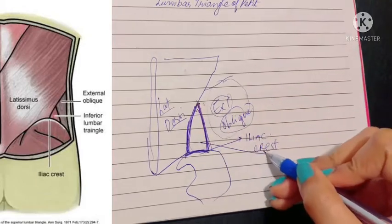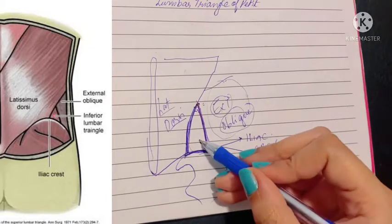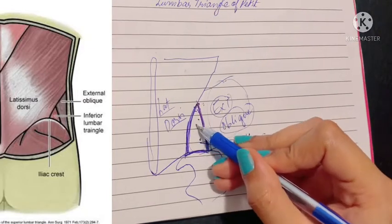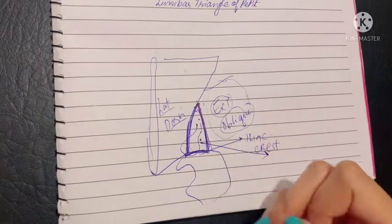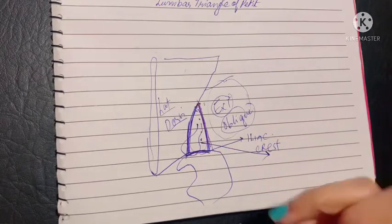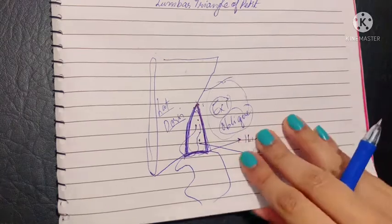What is the significance of this triangle? This is an area of weakness through which a hernia may protrude out. This is where most of the lumbar hernias occur. So that's all you need to know about these triangles.